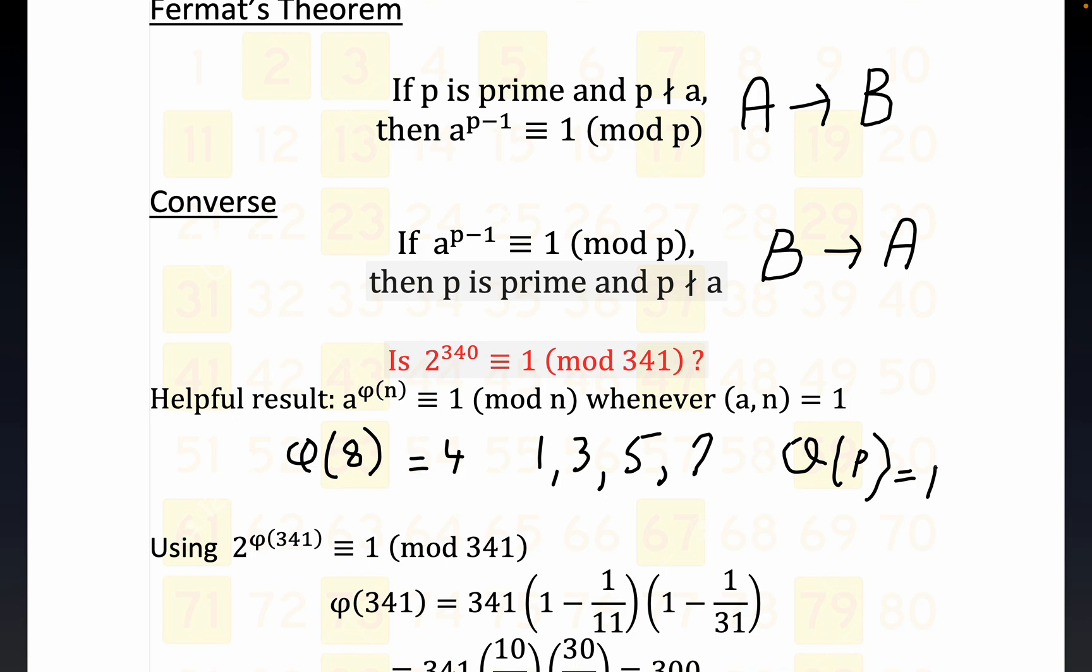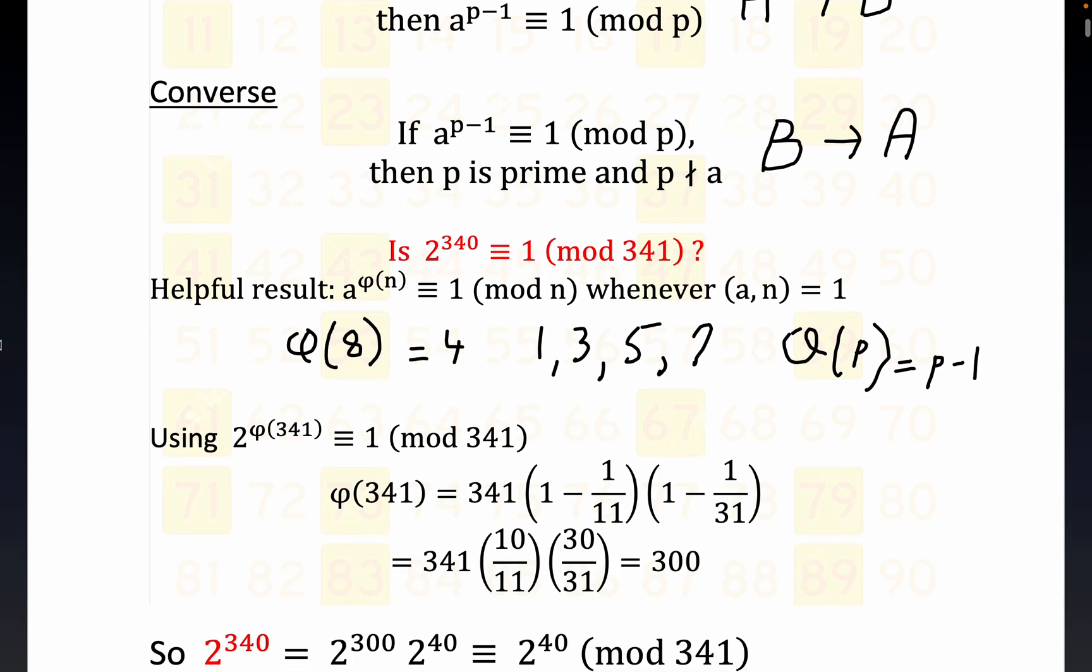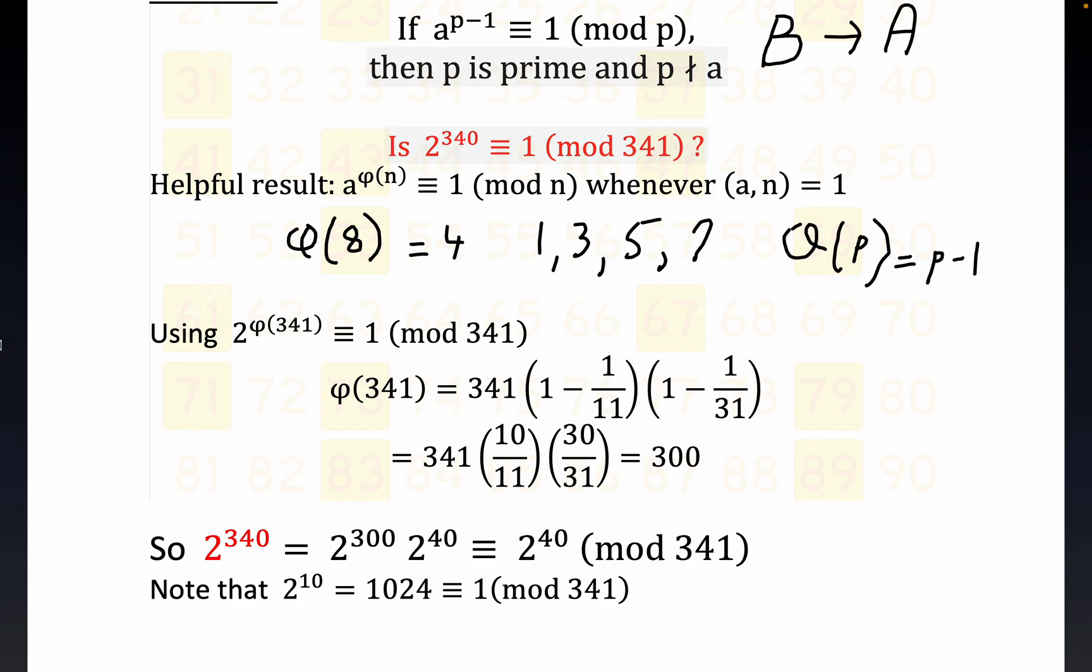That's literally the definition: all the numbers less than p are relatively prime to p. So anyway, let's see what we can do with this thing. There's a pretty well-known result - this is the result that we're going to use. I won't prove it; it's a standard proof in a number theory book.